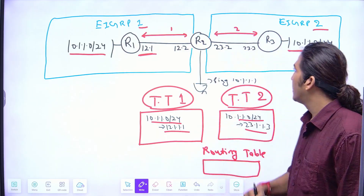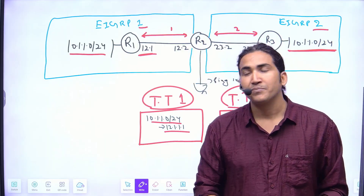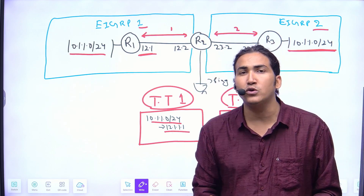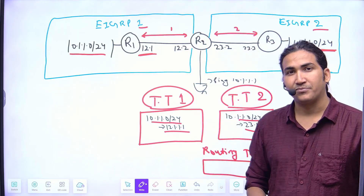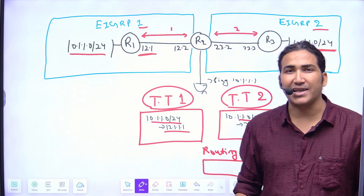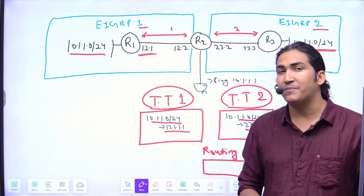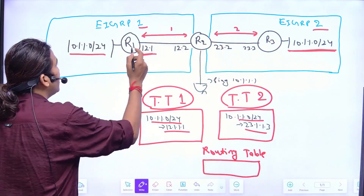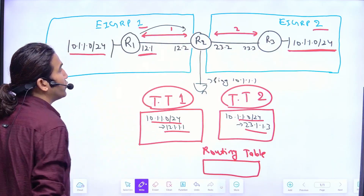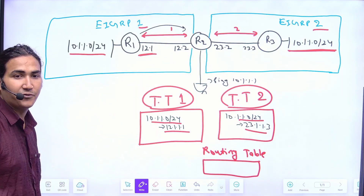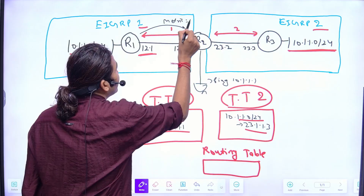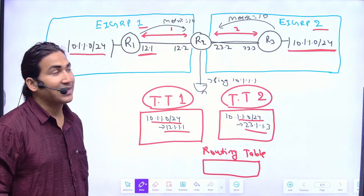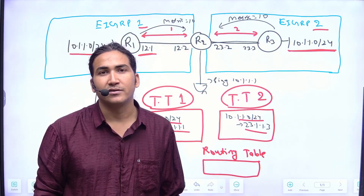Most people are saying router 2 will perform load balancing, but that is not the right answer. Why do most people say load balancing? Because the cost or metric appears the same from both sides. Router 1 advertises 10.1.1.0/24 to router 2, and router 3 also advertises it — both via Fast Ethernet links, so the metric would be the same. But in this particular scenario, metric doesn't matter.